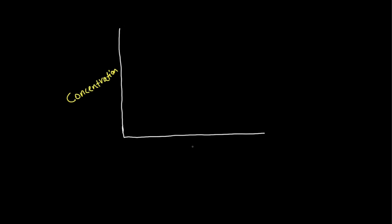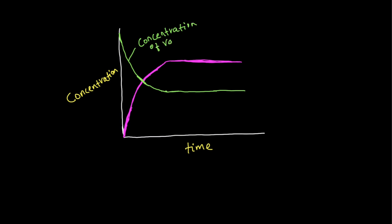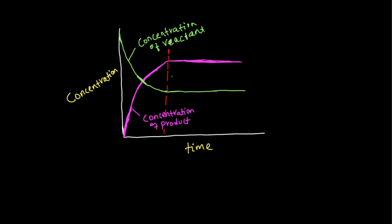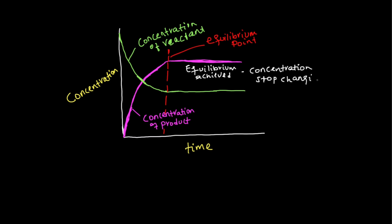On the concentration versus time graph, we see the concentration of reactant and the concentration of product. Initially, at time zero, the concentration of product is zero and only reactant is present. At the equilibrium point, the concentration of reactant is constant and the concentration of product is also constant.